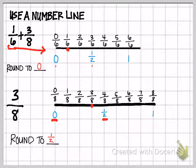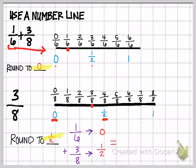Once I've done that, I can go ahead and add. So 1/6 we said was rounded to 0 and 3/8 we said was rounded to 1 half. So when I add that, 1 half plus 0 is just 1 half.